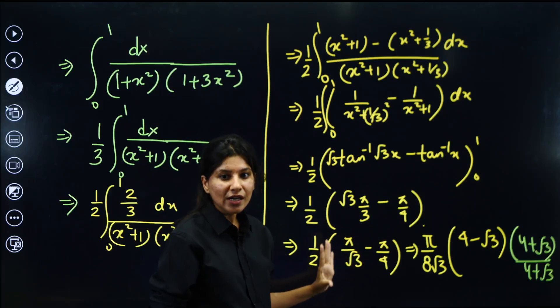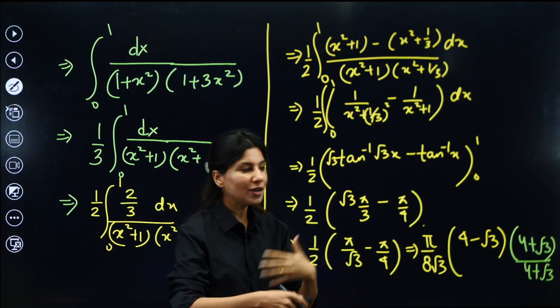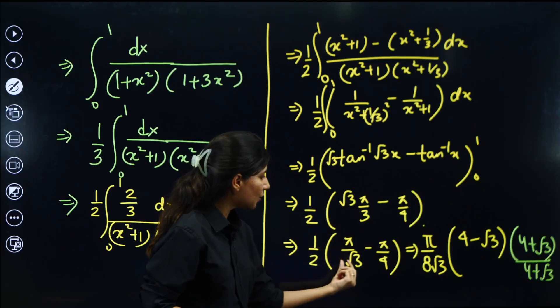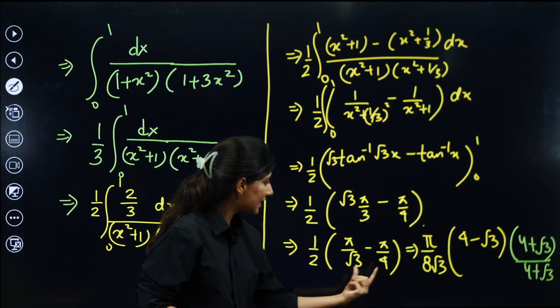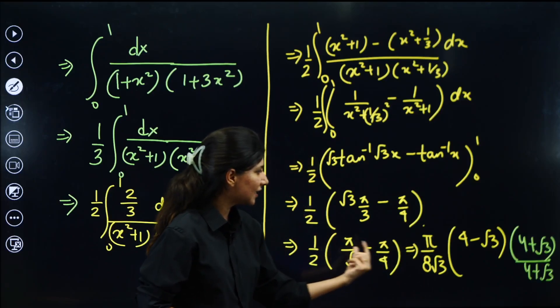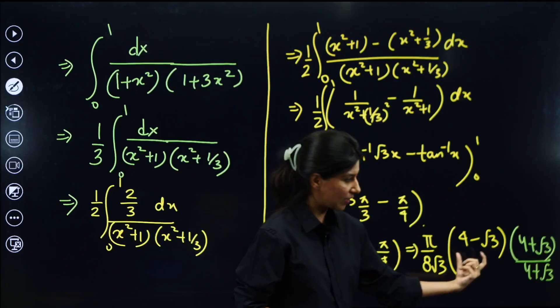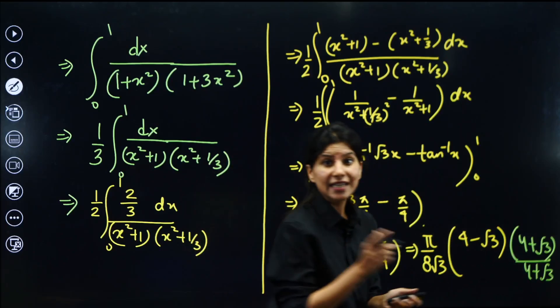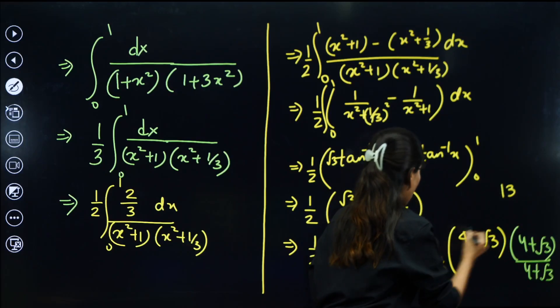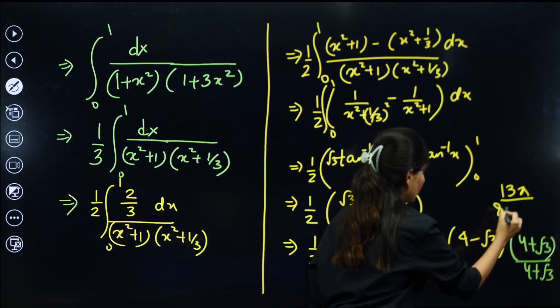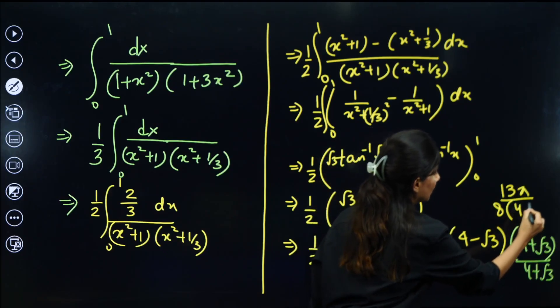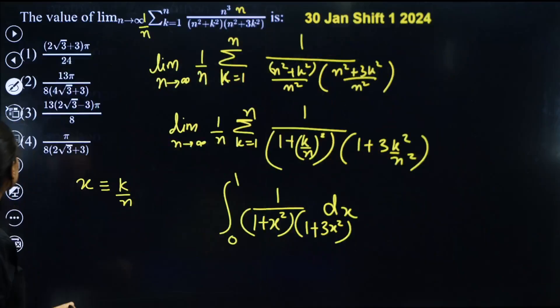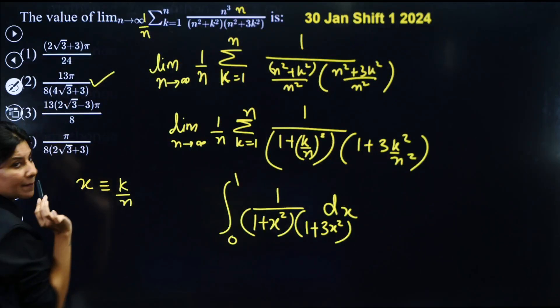Now you just have to manipulate, solve, simplify to match it with the final answer. So root 3 by 3 will be 1 upon root 3. Let's take LCM. So 4 root 3 into 2, 8 root 3. Pi can be taken out common. 4 minus root 3. Now rationalize it. 4 minus root 3, 4 plus root 3. That would be 16 minus 3, which is 13. Pi is already there, 8. Root 3 can be multiplied. So 4 root 3 plus 3. So this is your answer: 13 pi by 8, 4 root 3 plus 3. Can you see 13 pi by 8? Option 2 is absolutely right.